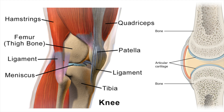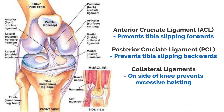The fibula and tibia are connected to each other by two ligaments, which are strong bands of tissue, and they're called cruciate ligaments. The two ligaments cross over each other like an X. The first is called the anterior cruciate ligament, often abbreviated as the ACL, and this ligament stops the tibia from slipping too far forward. The second ligament is called the posterior cruciate ligament, often abbreviated as PCL, and this stops the tibia from slipping too far back.